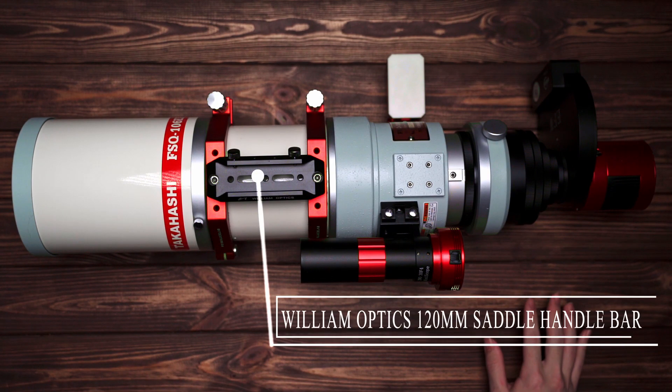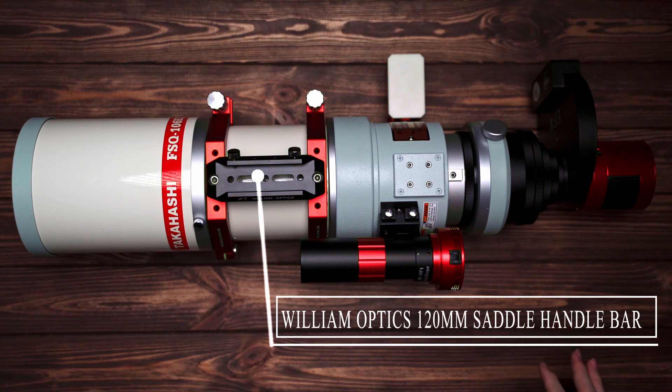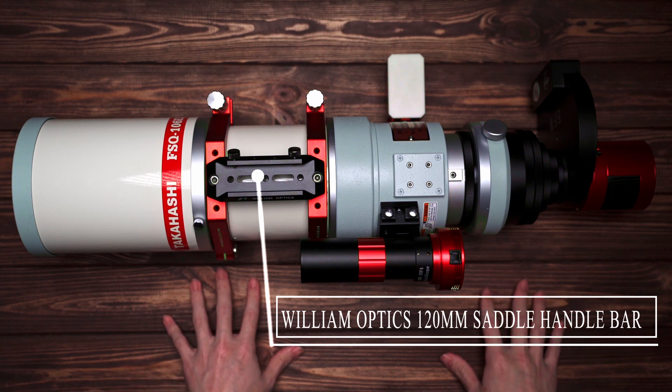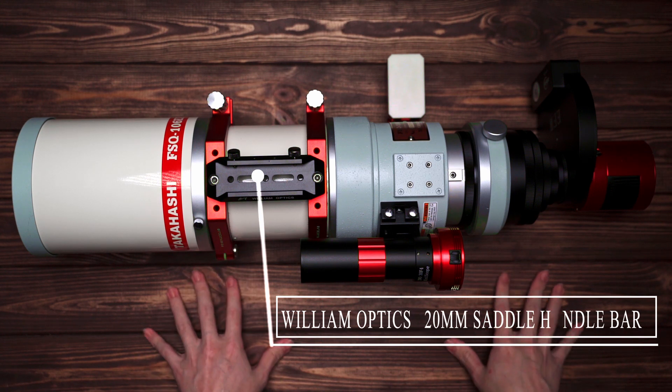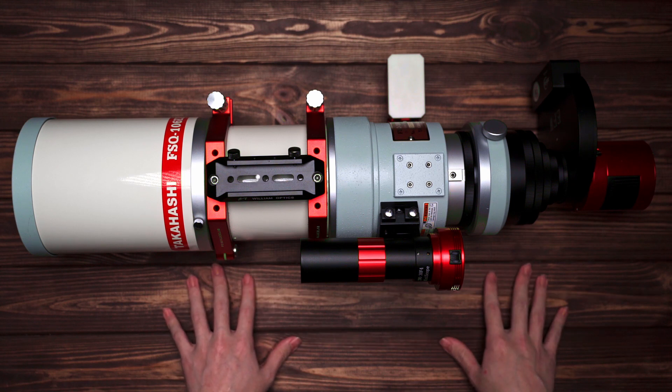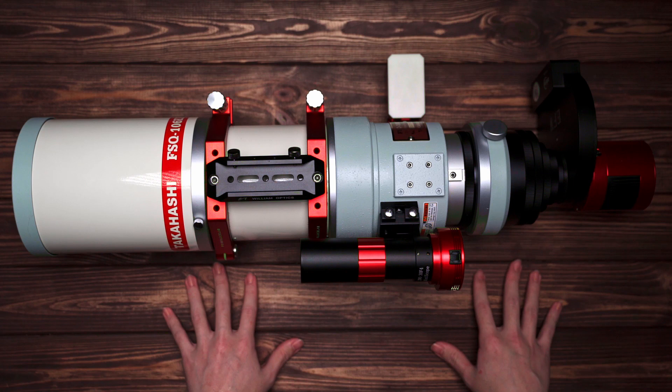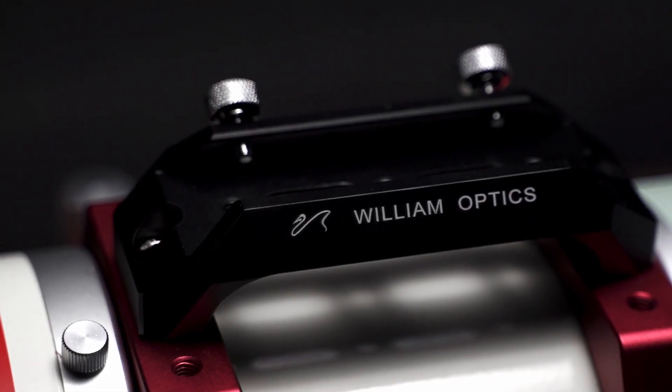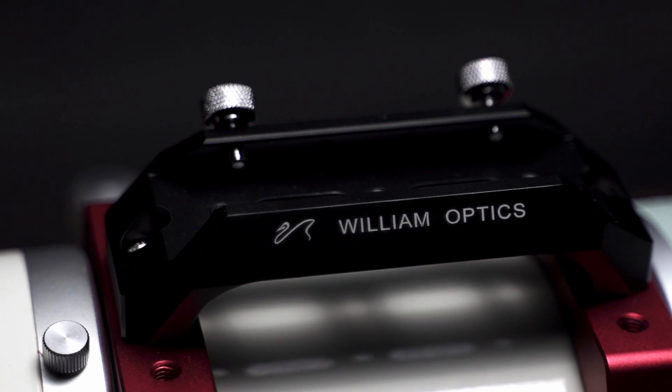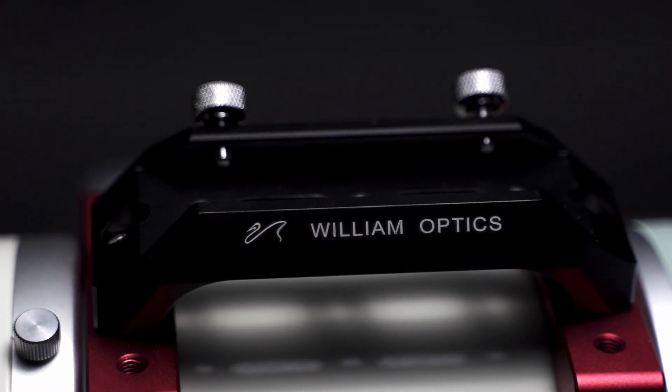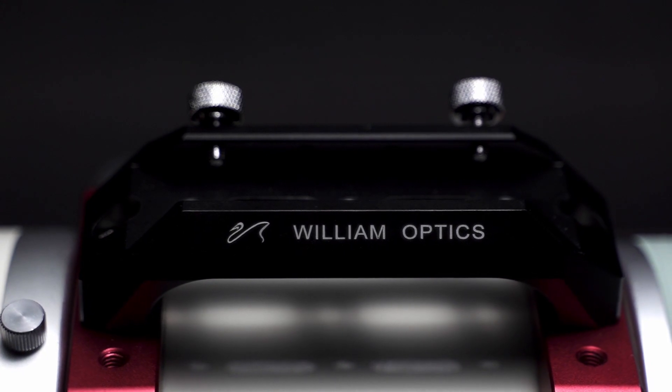And let's take a look at the handlebar. This handlebar plays a very important role in this setup because it really helps me to put it on the equatorial mount. Otherwise, you will have to try to lift it from the bottom of the telescope and put it on the mount while trying to tighten the lock screws, which is really a pain in the ass. So the handlebar is definitely one of the most important accessories for astrophotography setup, especially for heavy telescopes.